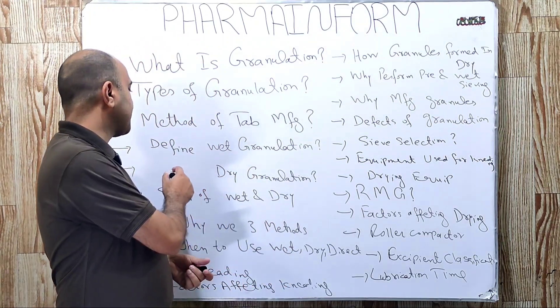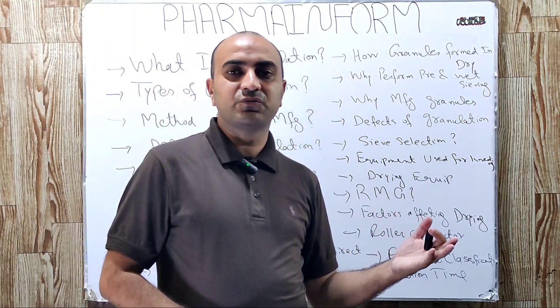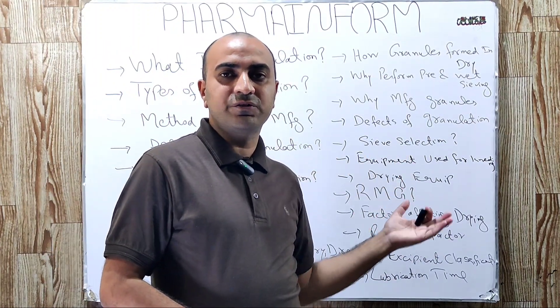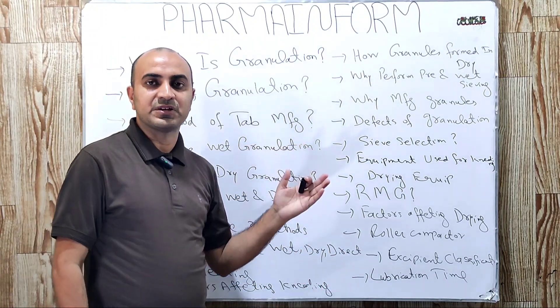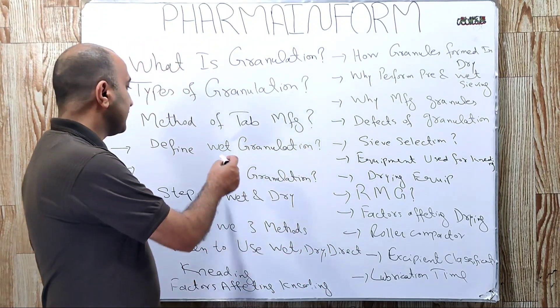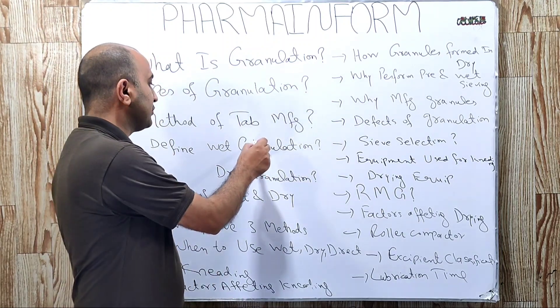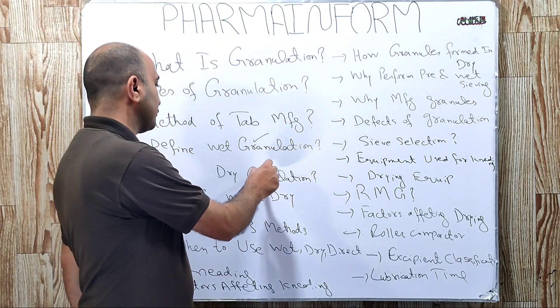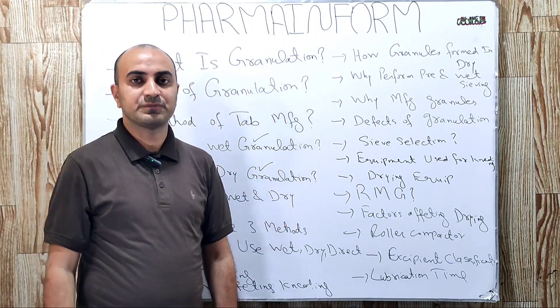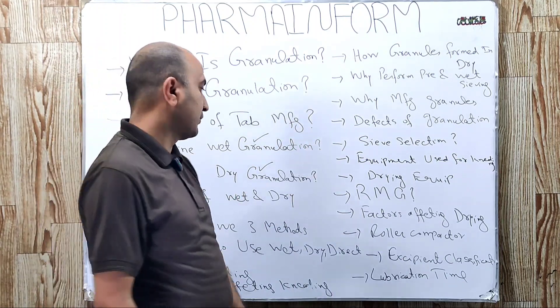The next question is define dry granulation. Dry granulation is the process in which we convert our powders into agglomerates or granules by the application of pressure. Here is the difference between these two methods. In this method, we use solvent or binder solution. Here we use only pressure. What is the reason, we will discuss later on in this video.